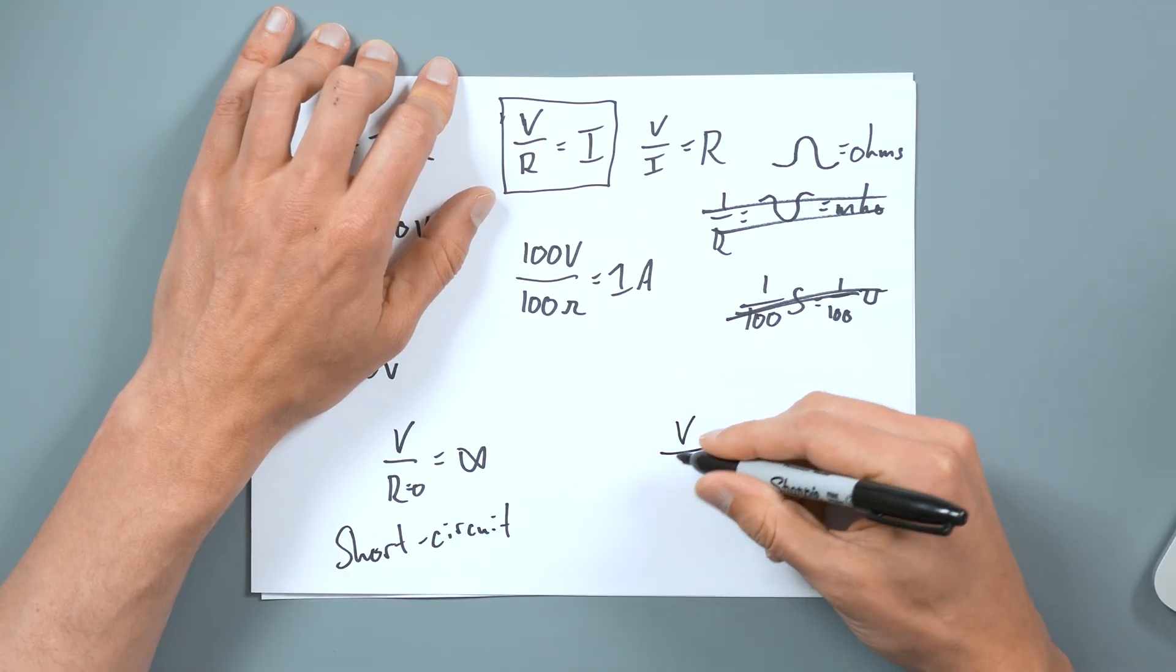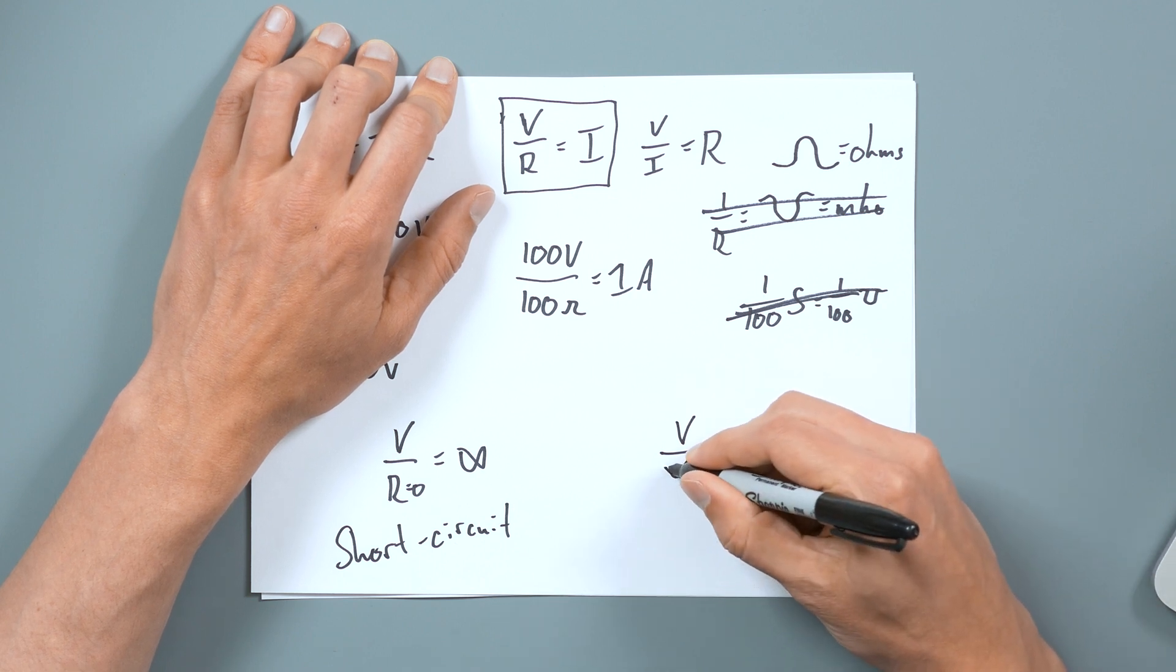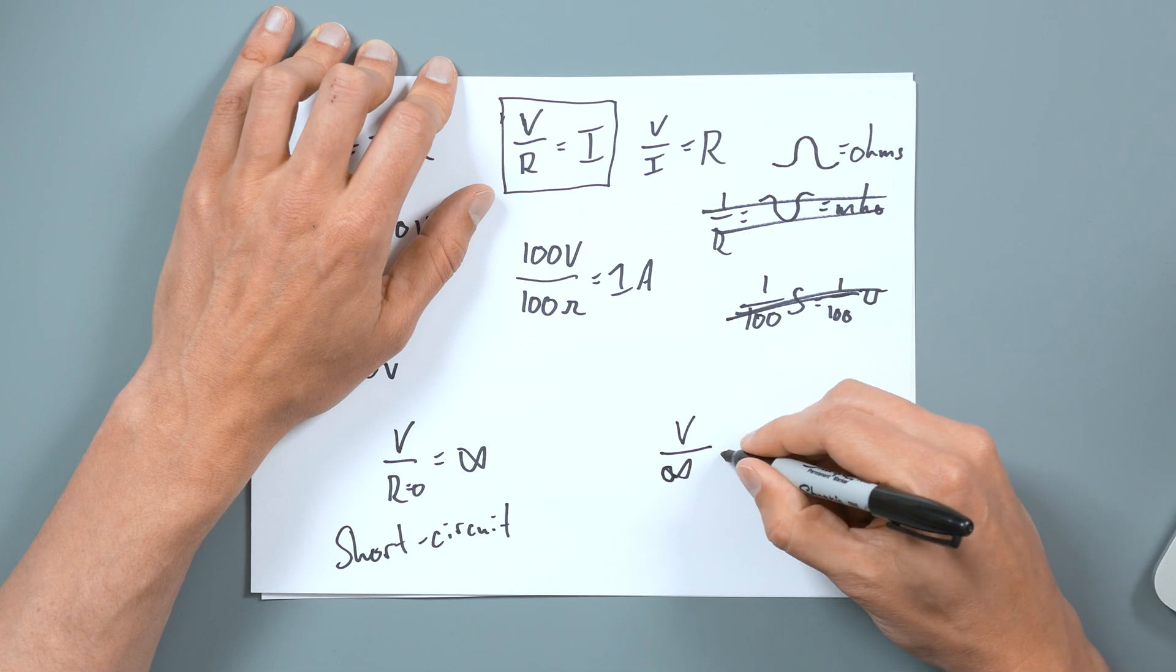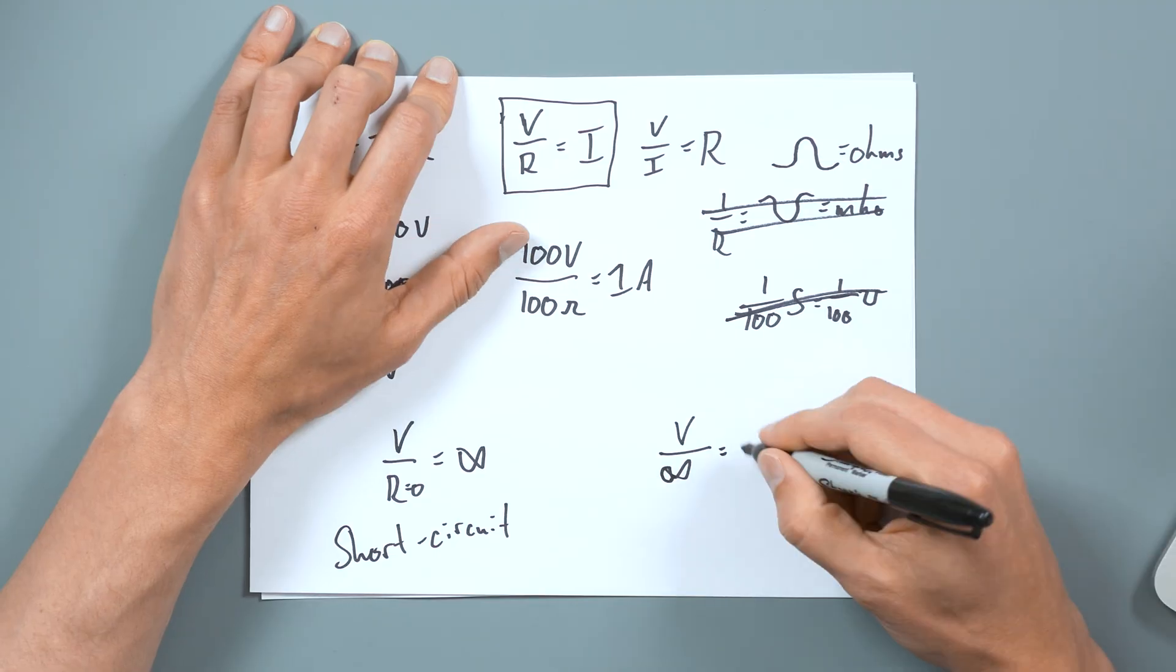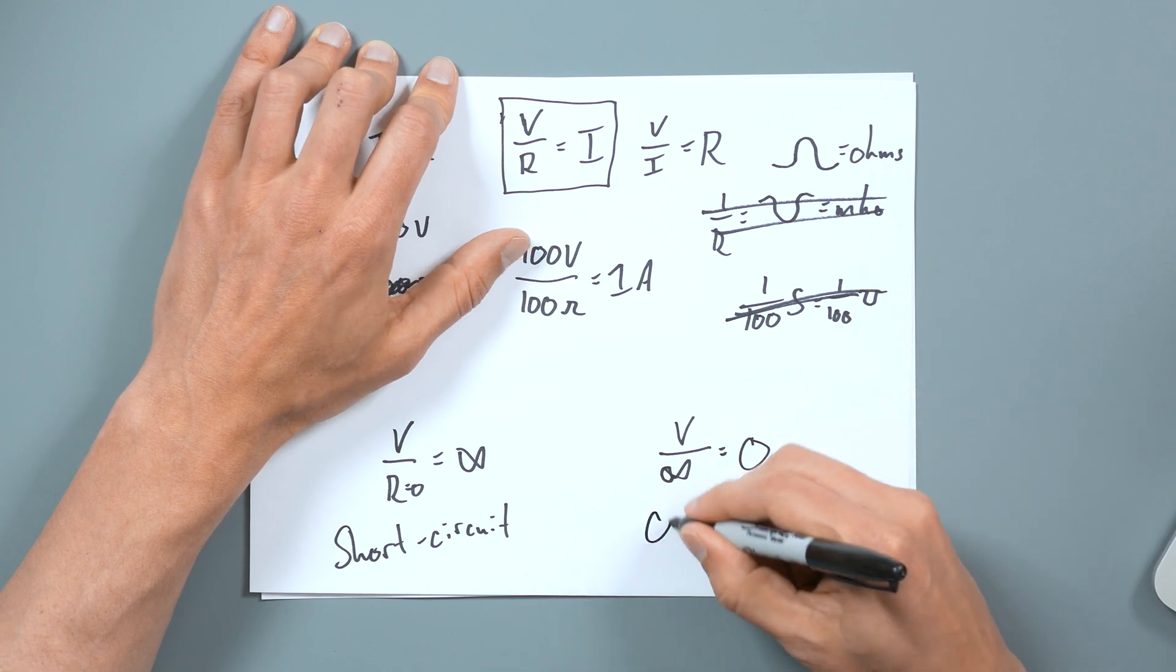Now, let's say we have the opposite problem, voltage over infinite resistance. Then what is our current going to be? It's going to be zero, the exact opposite. And this is called an open circuit.